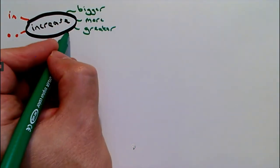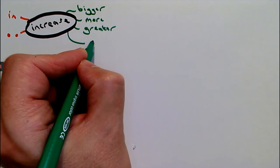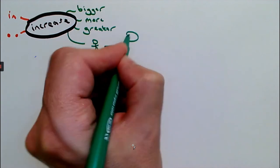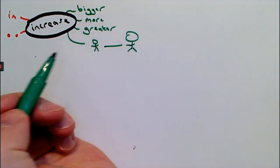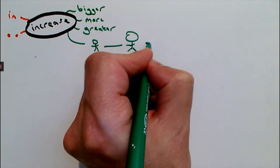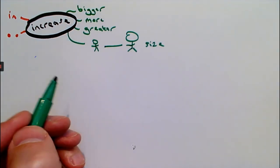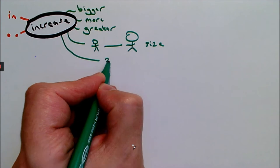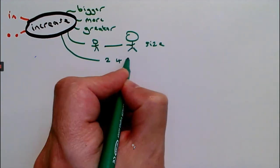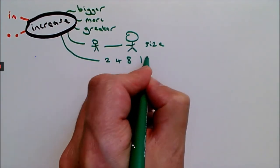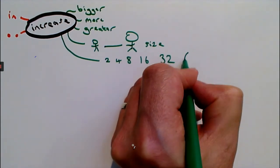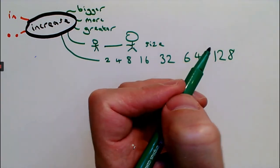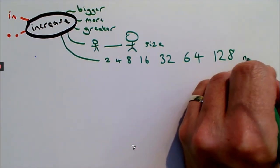That might be about the size of something. So it gets bigger as it increases, an increase in the size of something. It might be an increase in the number of something. So as the number goes up, it increases, an increase in the number.